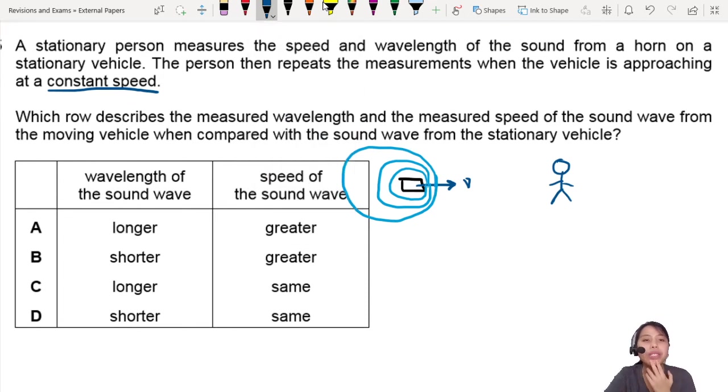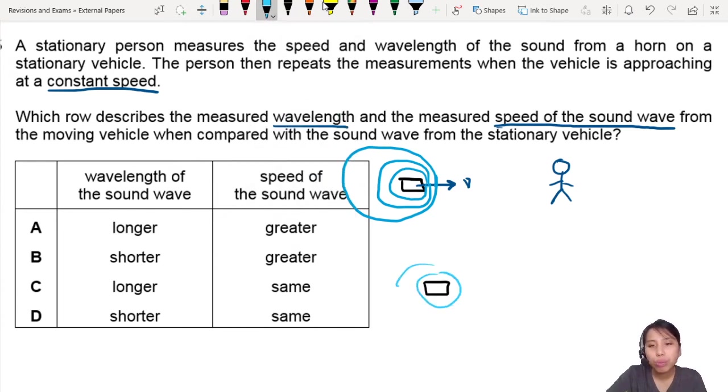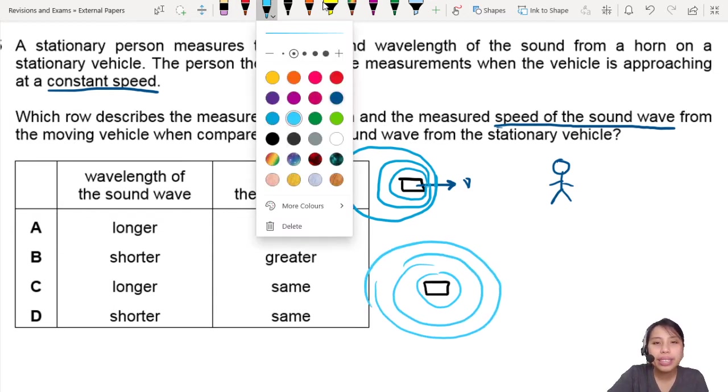So which row describes the wavelength and the speed of sound wave from the moving vehicle when compared to the sound wave from the stationary vehicle? So you have moving and then you compare it with when it's not moving, it's just going to release its sound wave like this. Pew, pew, pew, pew. Okay. So how do we compare this?